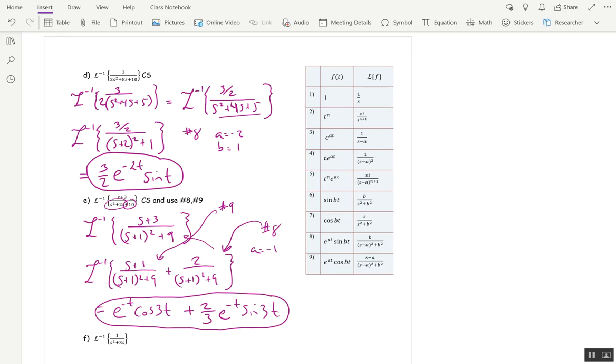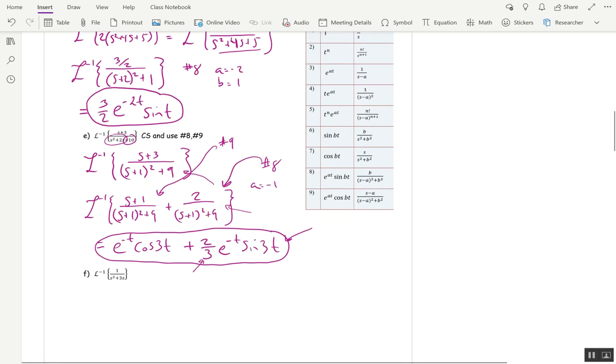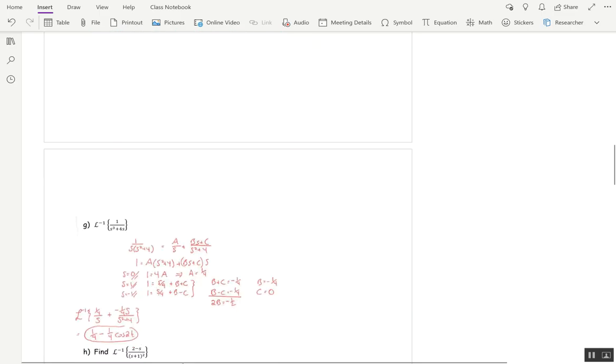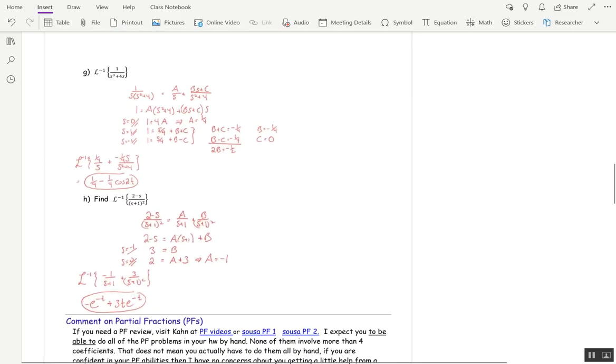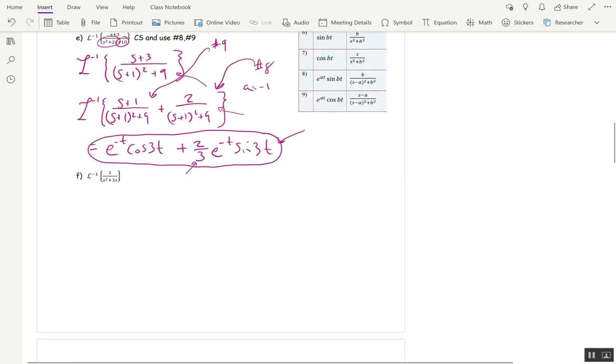Just to make sure you understand that, if I take L of e to the negative t sine 3t, I'll get a 3 upstairs, which will cancel with this 3 that I put here, and I'll be back to my original 2 on top. So you have to do a little bit of massage of terms. Last problem. Because this is f, but we did g and h in class last time, and I just put up, I re-put up the solutions that we did last time. So this is the last actual computation problem we have to do for this lecture.